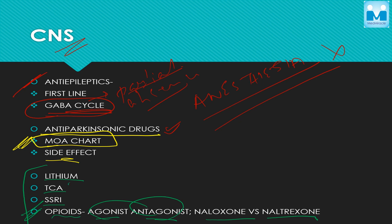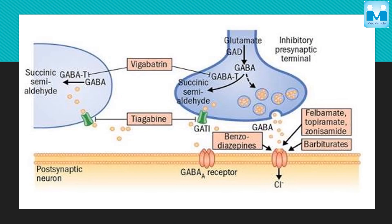For SSRIs and TCAs, you have to know the differences between them. For lithium, you have to know including the dose. This is the GABA cycle I was talking about — the various drugs acting at various points on the cycle — and an image-based question can come from this topic.